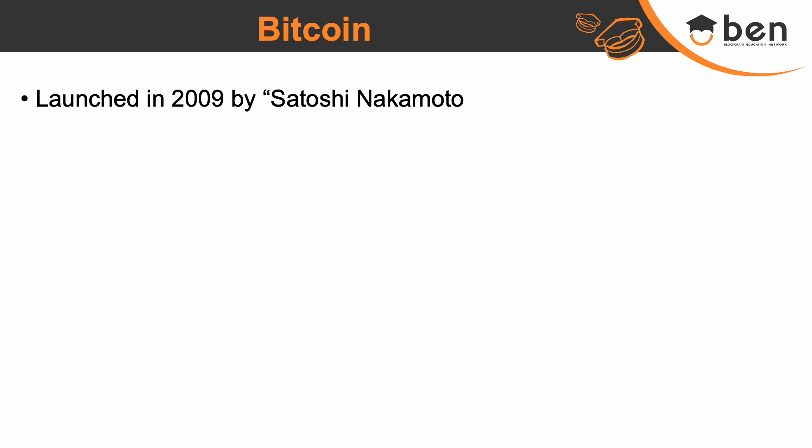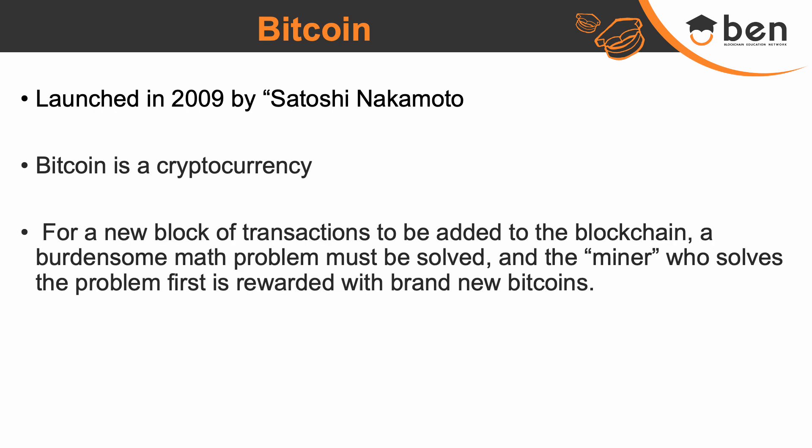Now let's discuss some popular blockchains. Bitcoin is the most popular and oldest blockchain, launched in 2009 by an anonymous person called Satoshi Nakamoto. Bitcoin is a cryptocurrency — it is important to note that Bitcoin is a cryptocurrency which uses blockchain as its underlying technology. Bitcoin uses the proof of work consensus protocol, meaning a burdensome math problem must be solved and the miner who solves it first is rewarded with some Bitcoins.